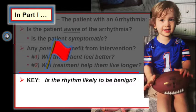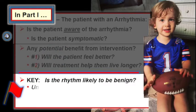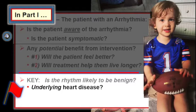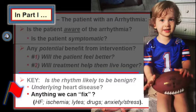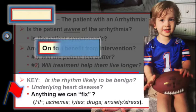We emphasized in part one the key issues of whether there is underlying heart disease, and if there is anything we can fix — such as ischemia, heart failure, electrolyte disturbance, use of substances such as caffeine, alcohol, over-the-counter sympathomimetics, or excessive anxiety or stress. In part two, we'll now look a bit closer at some specific arrhythmias.